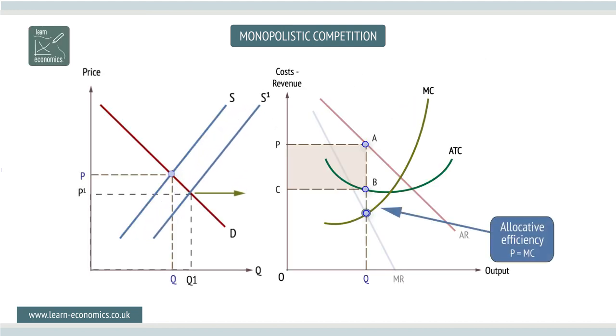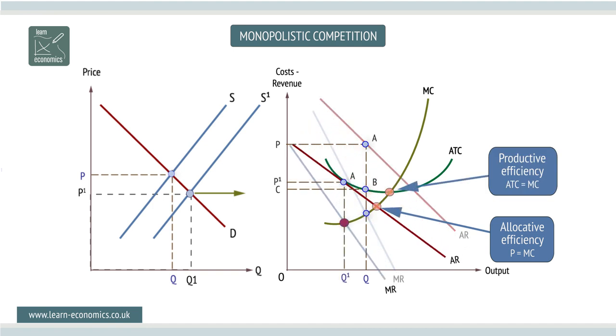For this firm, average cost is not at its lowest. Here we can see that in the long run, the firm is also inefficient.